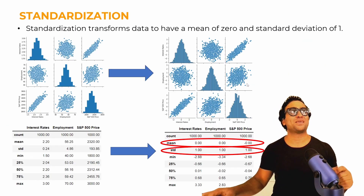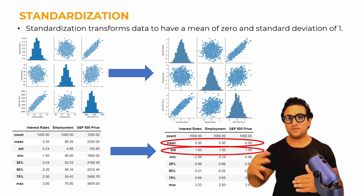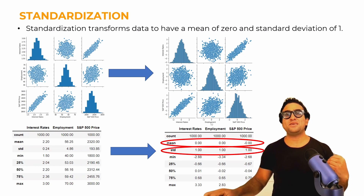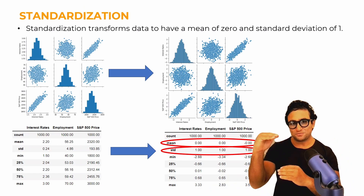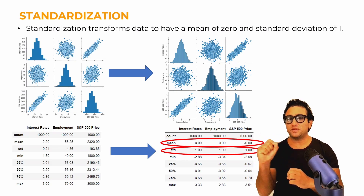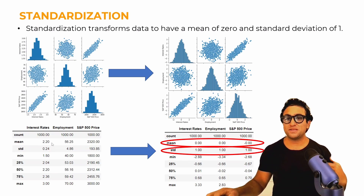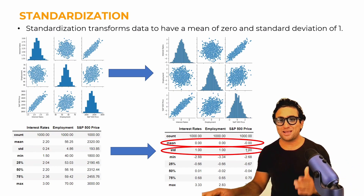Let's look at an actual example. On the left-hand side is the raw data, on the right-hand side is the standardized data after transformation. The raw data for employment, for example, ranges between 40 and 70. In the standardized form, it ranges between roughly minus three and three. When we perform standardization, we don't care about min and max values — we care about the mean and the standard deviation. The statistical summary shows the average was 2.2 in the raw data; now all means are zero, and all standard deviations become one.